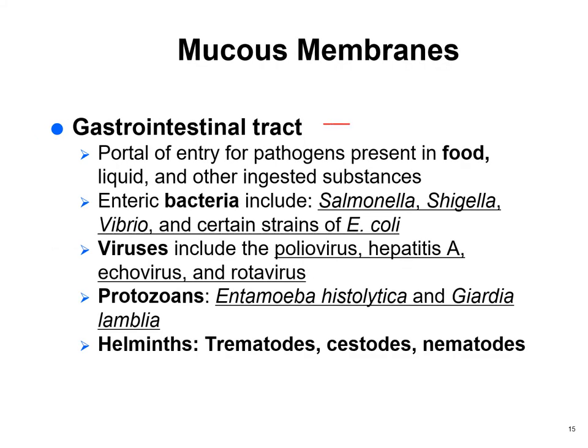The GI tract is a portal of entry for pathogens in food, liquid, and anything you eat. Enteric — meaning gut — bacteria include Salmonella, Shigella, Vibrio, and pathogenic E. coli. Viruses include polio and hepatitis A — which is food-borne, unlike hepatitis B, which is blood-borne. Raw oysters can transmit hepatitis A or rotavirus through sewage contamination. Entamoeba histolytica and Giardia lamblia come from water. Helminths include trematodes, cestodes, and nematodes — we'll cover those in another chapter.